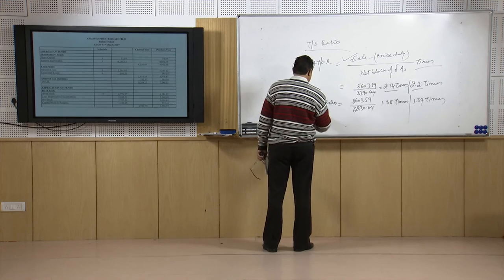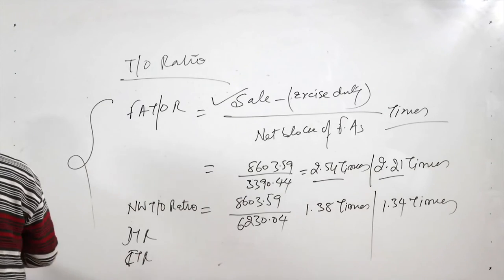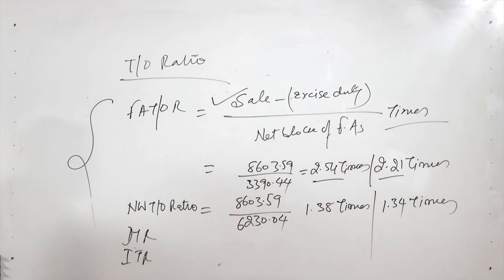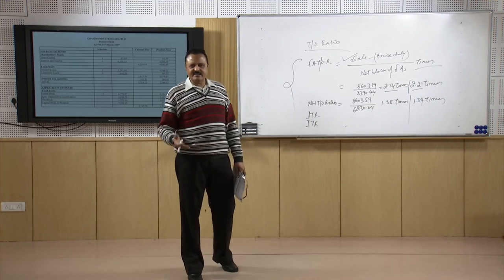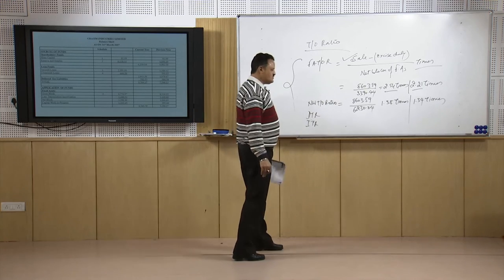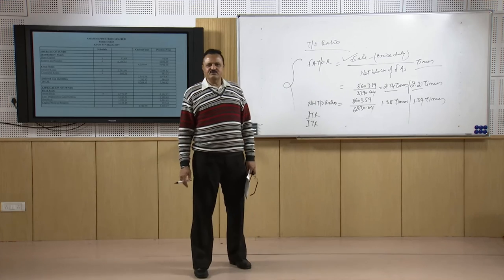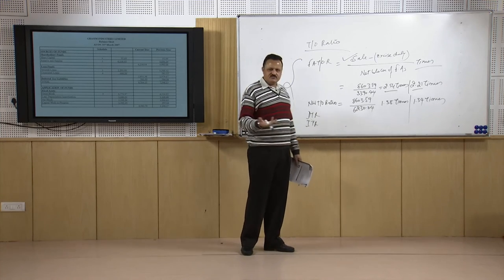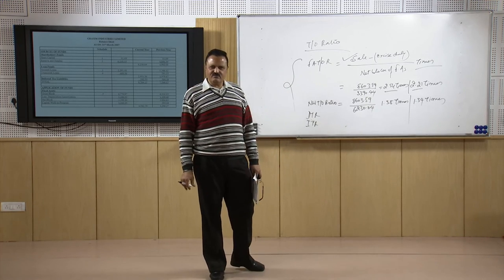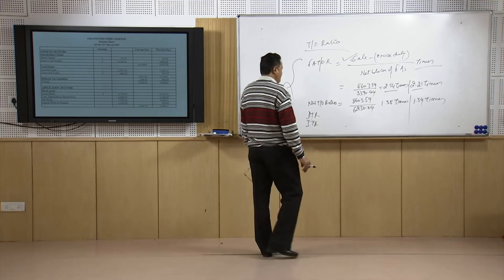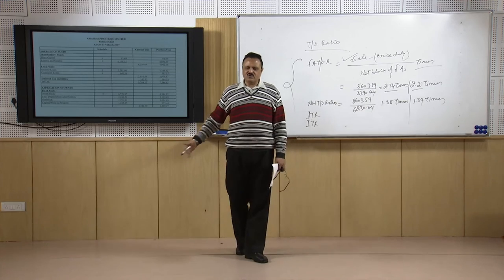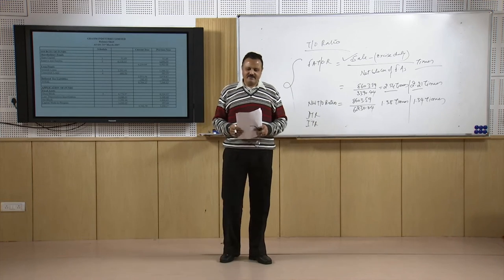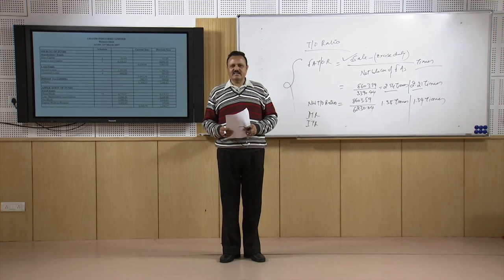The other two ratios — debtors turnover ratio (DTR) and inventory turnover ratio (ITR) — have already been discussed. The debtors collection period is just 20 days and inventory conversion period is 70 days. In 20 days, credit sales are converted into cash; in 70 days, inventory is converted into sales and then into cash. The overall turnover and resource efficiency of the firm is really wonderful. The firm is performing exceedingly well, as reflected in both the financial statements and all the ratios calculated. The remaining types of ratios will be discussed in the next part. Thank you.